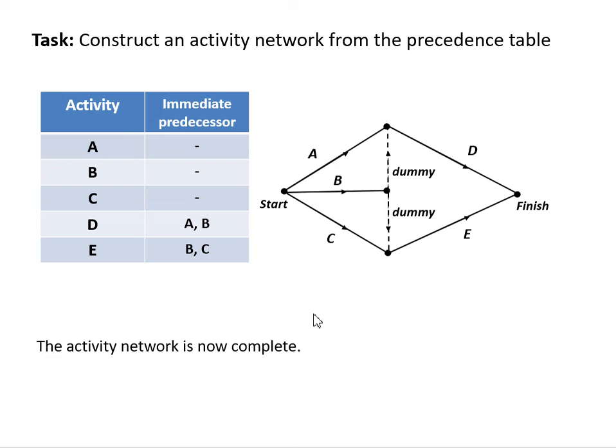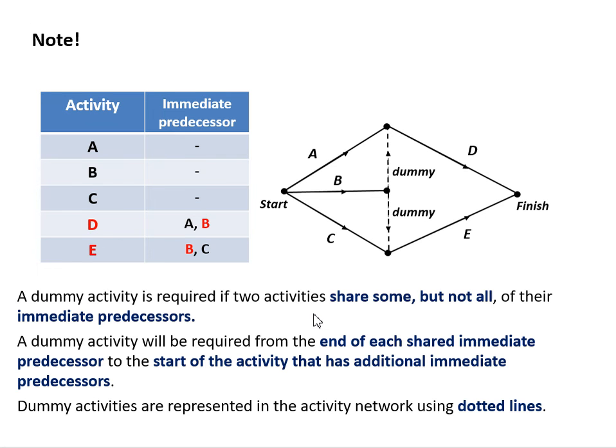So we've now completed our activity network. Just very quickly, we can see that a dummy activity is required if two activities require some but not all the immediate predecessors. And our dummy activity is drawn at the end of our immediate predecessor down to the beginning of our next activity. And finally, we use dotted lines to represent our dummy activities.